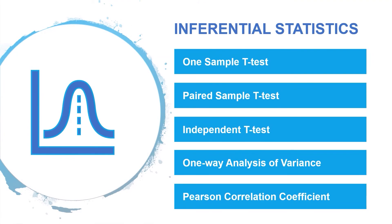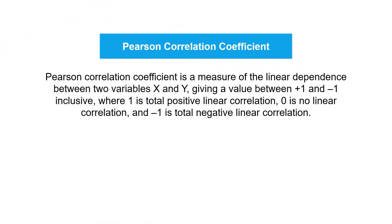The last test is the Pearson correlation coefficient. This is a measure of the linear dependence between two variables, X and Y, giving a value between positive 1 and negative 1 inclusive, where 1 is total positive linear correlation, 0 is no linear correlation, and negative 1 is total negative linear correlation.